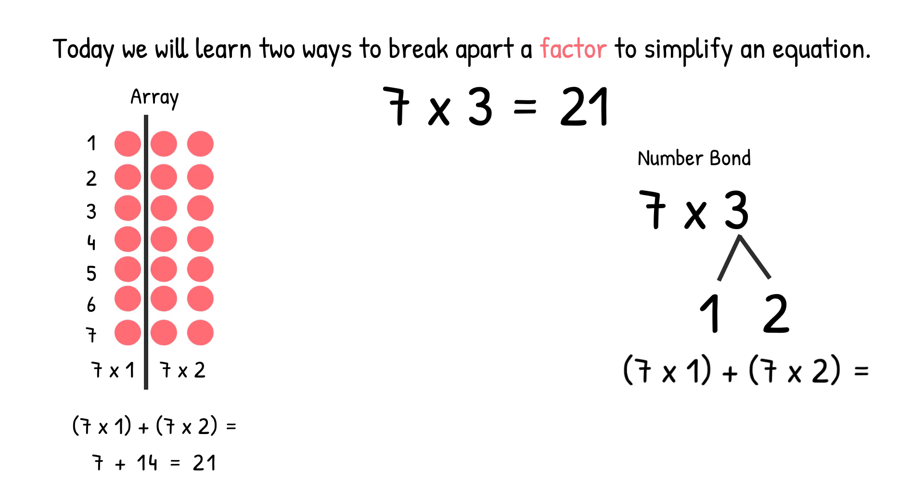Now we can write our two smaller facts: 7 times 1 in parentheses, plus 7 times 2 in parentheses, equals. We do our parentheses first. So 7 times 1 equals 7, and 7 times 2 equals 14. And then we add those products together, 7 plus 14 equals 21. So we got the same answer using two different strategies.